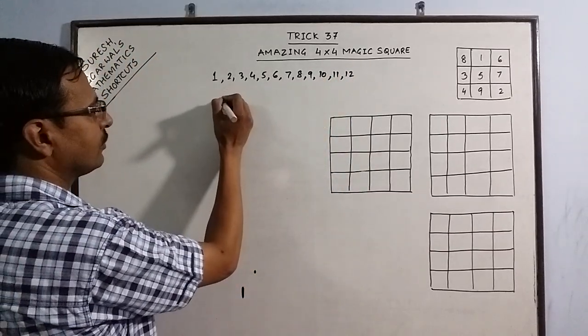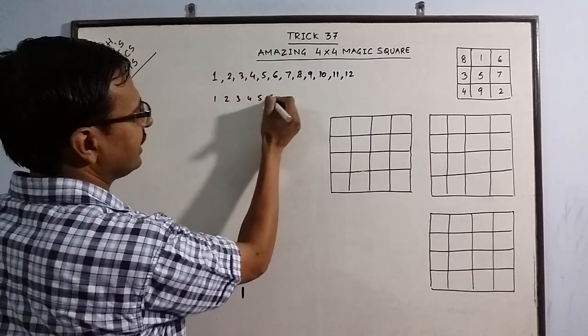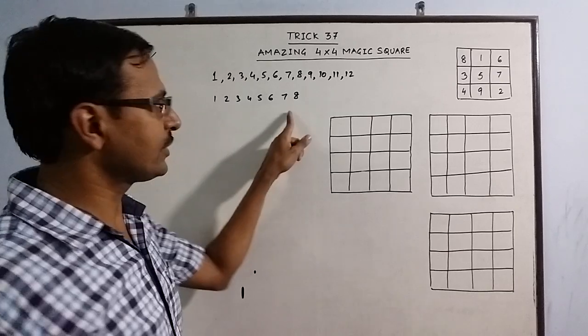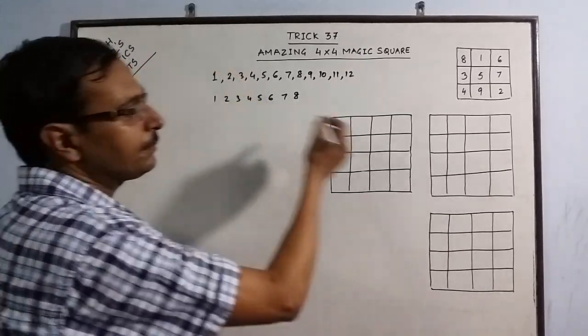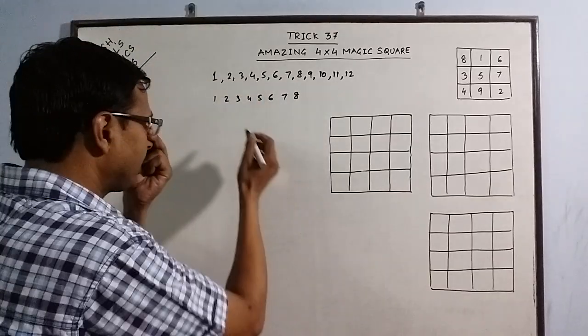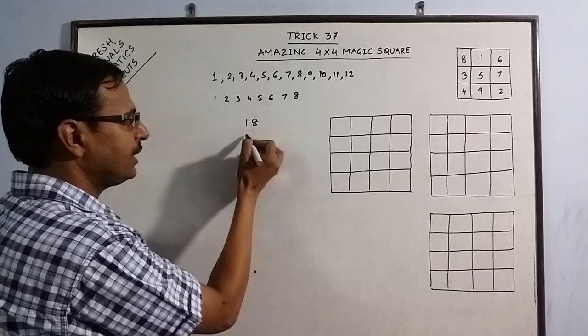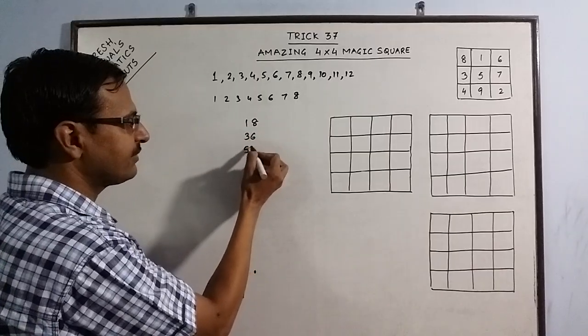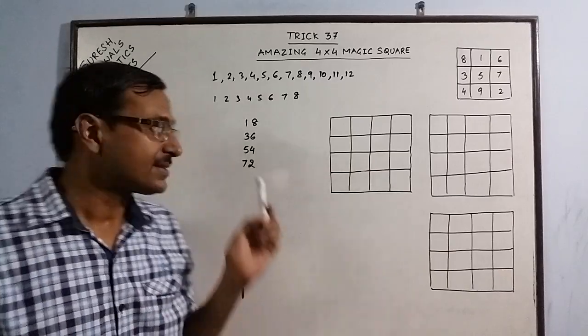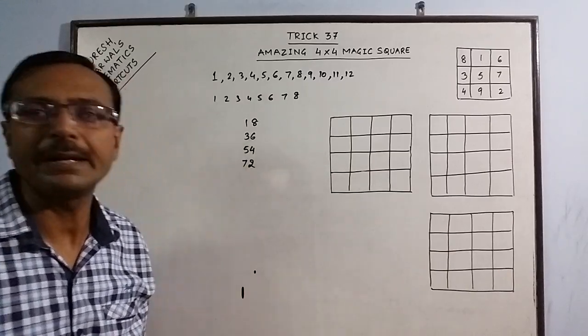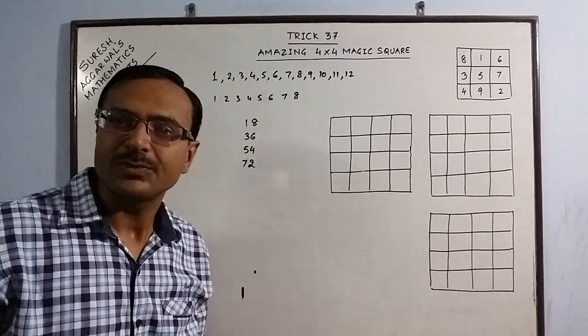And out of these 12 numbers also, I am going to use the numbers 1 to 8 first. So, 1, 2, 3, 4, 5, 6, 7, 8, these are the 8 numbers which I am going to use first. Then I will fill up 9, 10, 11 and 12. Now, for filling up these 8 numbers, what I do is, I write the table of 18. Say, 18 ones are 18, 18 twos are 36, 18 threes are 54 and 18 fours are 72. Observe in this 4 numbers, the table of 18, the first 4 multiples of 18, that we use all the digits from 1 to 8.